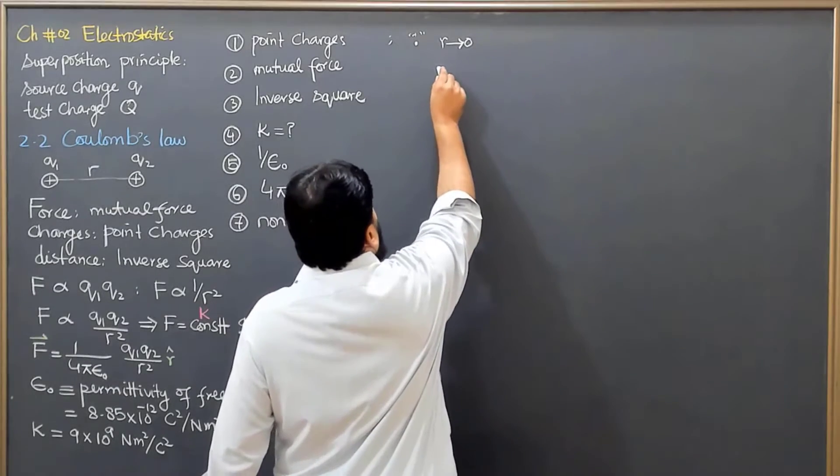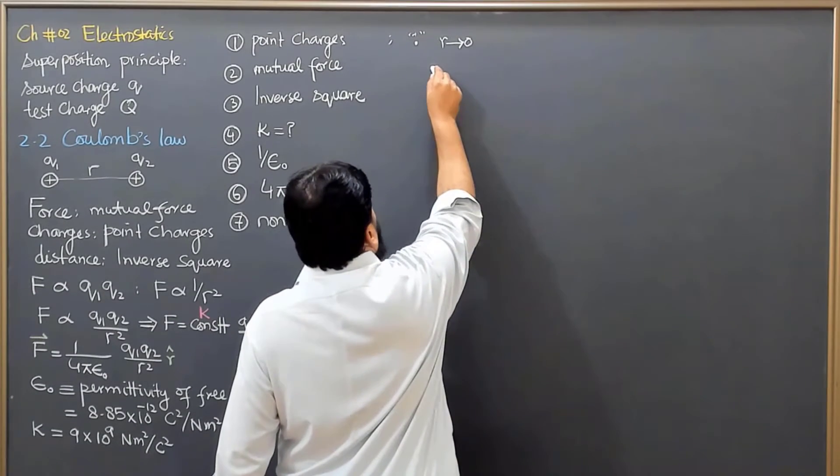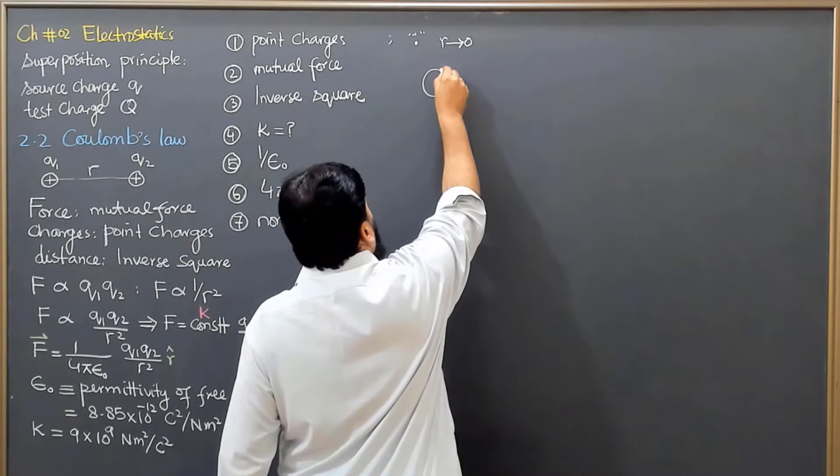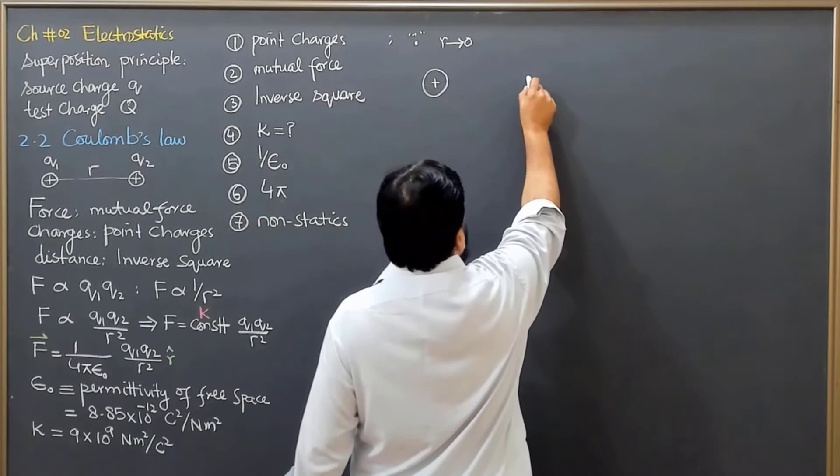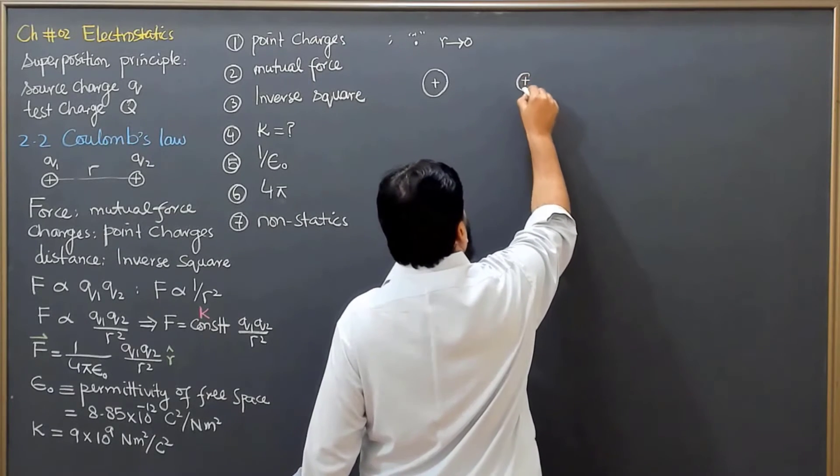Let me explain this further. If, for example, instead of point charge I'm having a big charge, a macro charge, and it's a big charge here and here is also another charge which is a big charge, not a point charge.